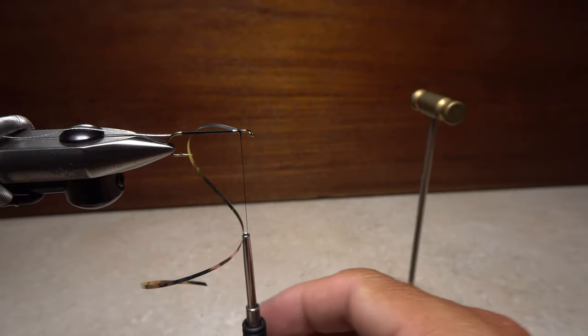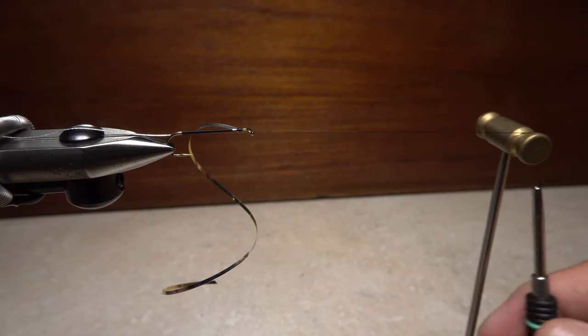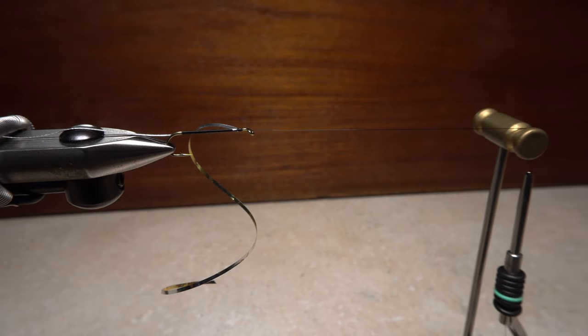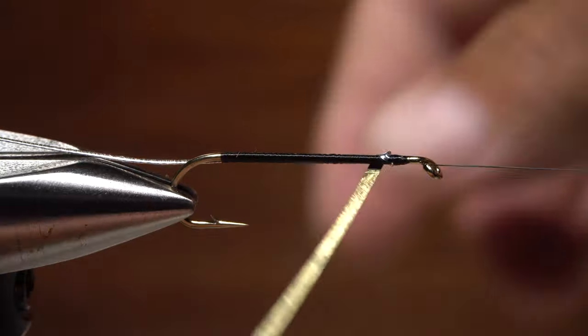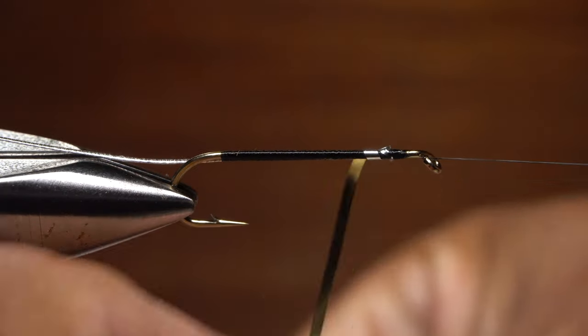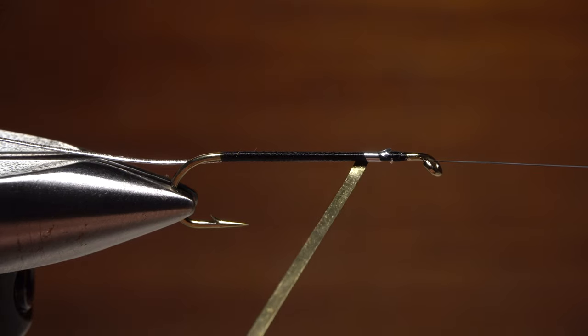If you have one, bring your bobbin cradle around into the correct position and use it to hold your tying thread in line with the hook shank. Get hold of the tinsel and start taking wraps rearward with it. Rarely does the first wrap look good, so don't sweat it.